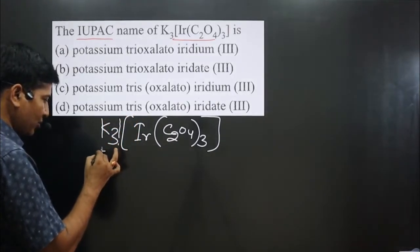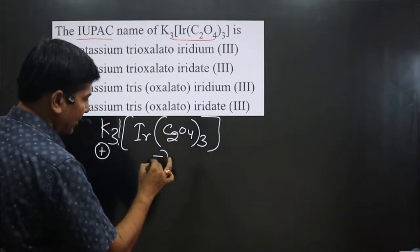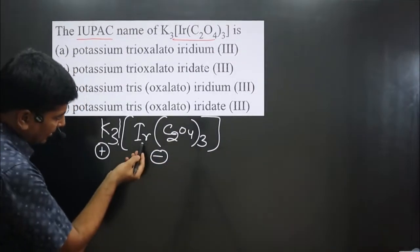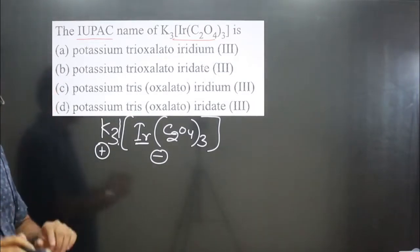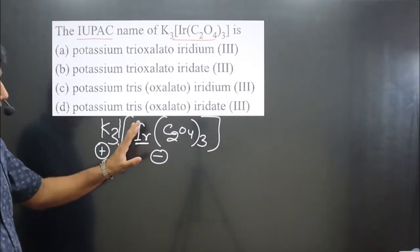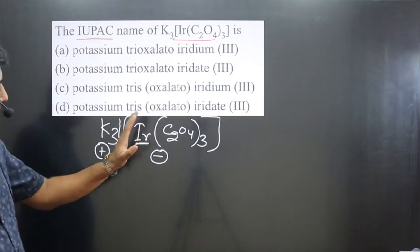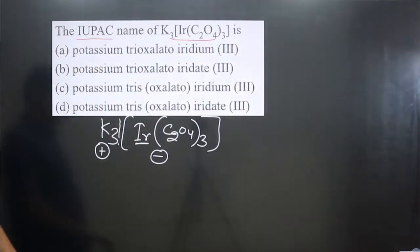...this is the counter ion. The first one is the positive part and the next one is the negative part. You can see the central element is present in the negative part, which means we have to use the special name. This is iridium, and when we name it, it will become iridate.